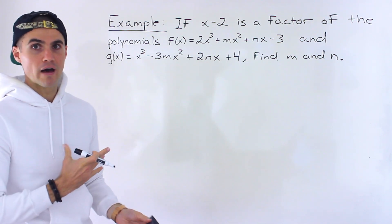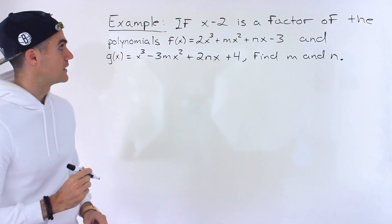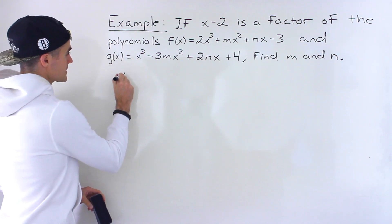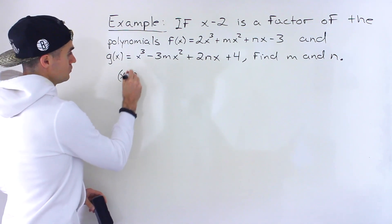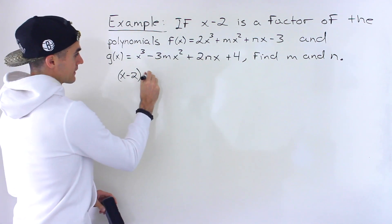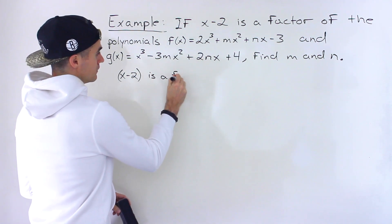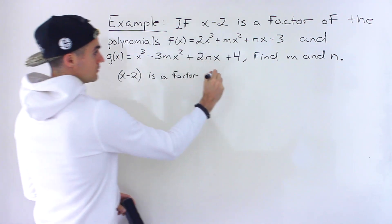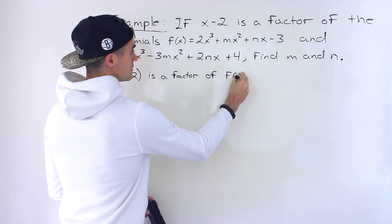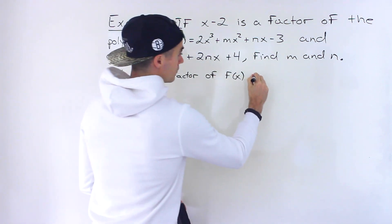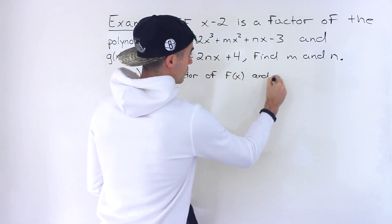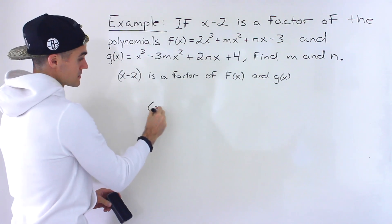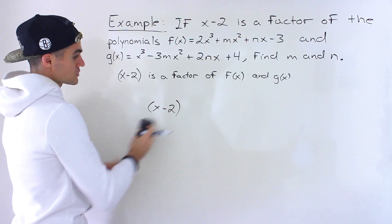we have to find both values m and n. Notice that we're told x minus 2 is a factor of both polynomial f of x and polynomial g of x. So if we were to factor both of those polynomials, x minus 2 would be one of the factors.